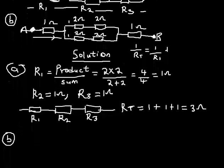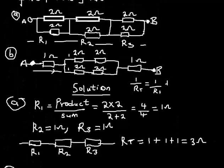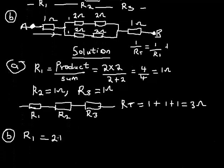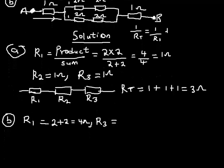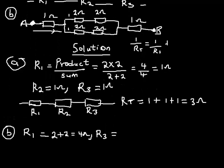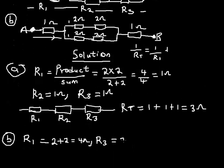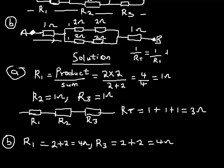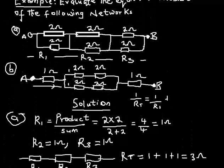Let me use R1 to represent the sum of the resistance of the first branch: that's 2Ω + 2Ω = 4 ohms. And R2 to represent the resistance of the second branch: that's also 2Ω + 2Ω = 4 ohms.